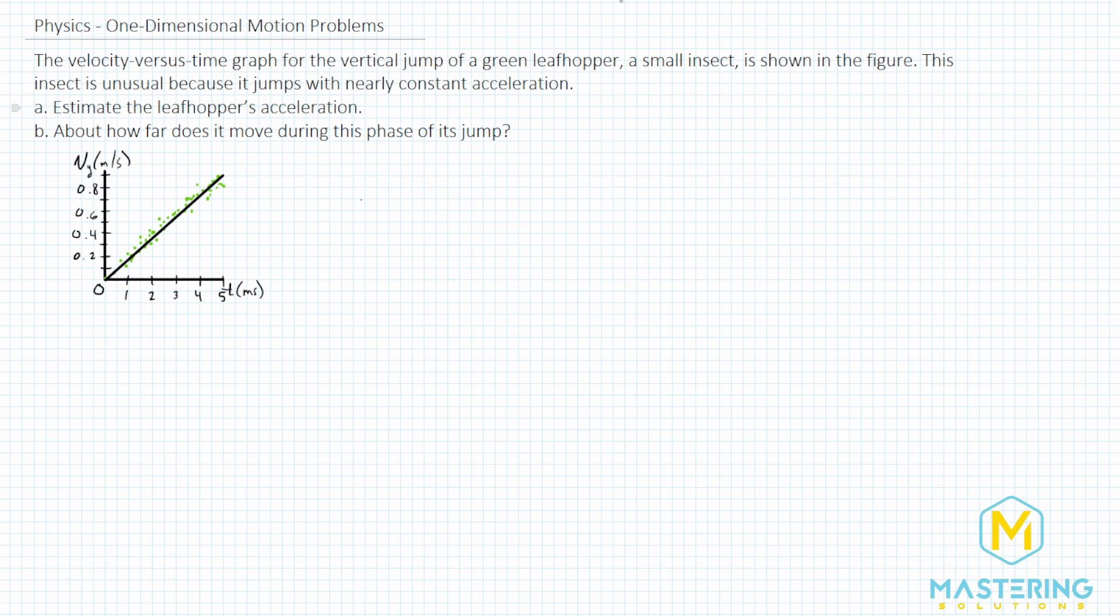So to get the acceleration from a velocity versus time graph, we find the slope of this line, which will tell us the acceleration. Now it does that because the acceleration, you can remember that the formula is the change in the velocity over the change in the time. Well, what's the formula for a slope? It's rise over run, right?